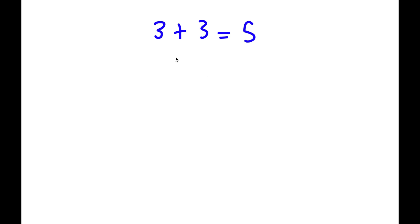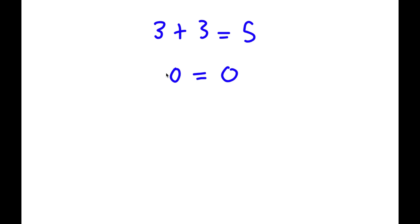In this problem I'm going to be proving that three plus three is equal to five. To prove this, I'll start with the statement zero is equal to zero, which is obviously true because any number is equal to itself.